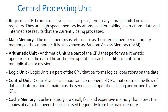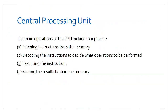To understand how the CPU works, we need to understand the four main operations, which we normally refer to as the fetch-execute cycle. These four main operations summarize the functionality of the CPU: fetch the instruction, decode the instruction, execute the instruction, and lastly either display or store those instructions in memory.